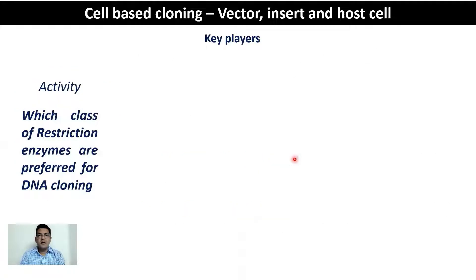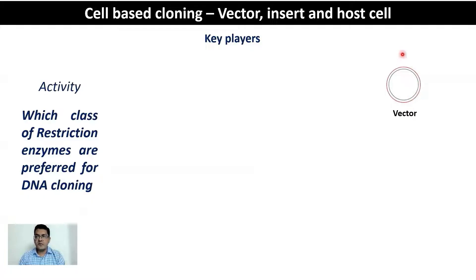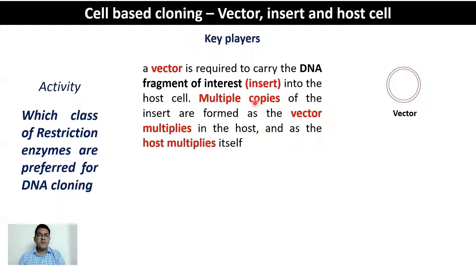There are three key players in cell-based DNA cloning: the vector, the insert, and the host cell. The first and most important player is the vector, which is your transport and replication vehicle — usually a double-stranded closed circular DNA that integrates your DNA of interest. A vector is required to carry the DNA fragment of interest, which is also your insert, into the host cell.